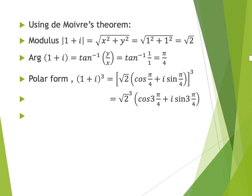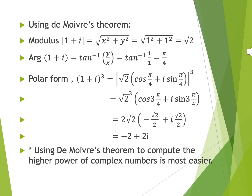We are asked to find (1 + i)³, so we raise the polar form to the power of 3. The modulus is raised to the power of 3, and the argument is multiplied by 3. So we have (√2)³ · (cos(3π/4) + i·sin(3π/4)). Using a calculator, cos(3π/4) = −√2/2 and sin(3π/4) = √2/2. After simplifying, the answer is −2 + 2i.